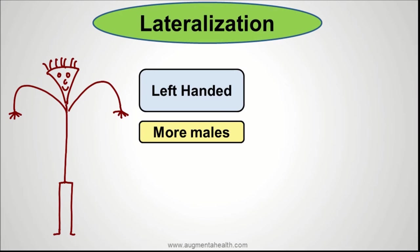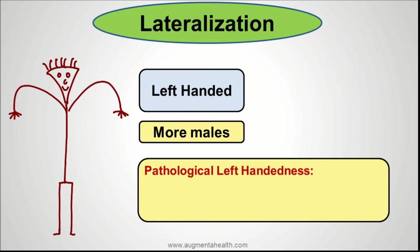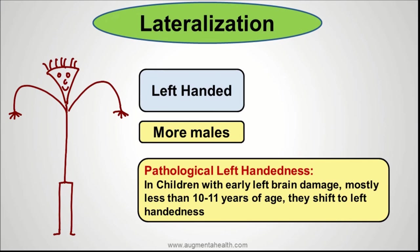Another interesting point is to remember about pathological left-handedness. What is pathological left-handedness? In children less than 10 to 11 years of age, if they have early left brain damage, it typically happens that these children, who might have traditionally been right-handed, would actually start using more of their left hand and start acquiring more left-handedness. This is called pathological left-handedness, and it occurs because of the early insult to the left side of the brain.